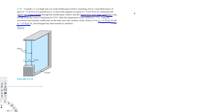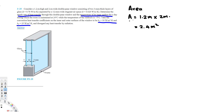To do this problem we need to calculate the area and individual resistances. The area is 1.2 meters high times 2 meters wide, which gives us 2.4 square meters.